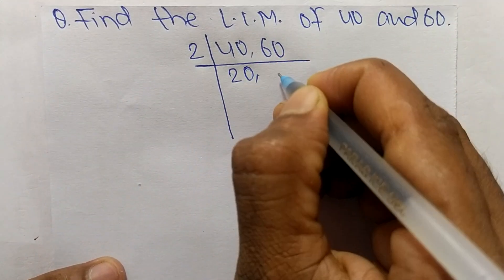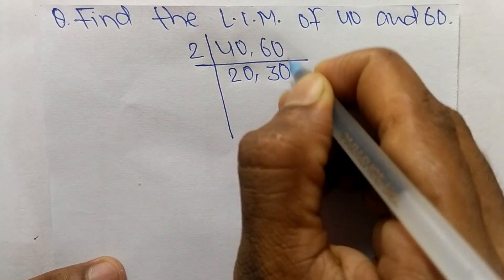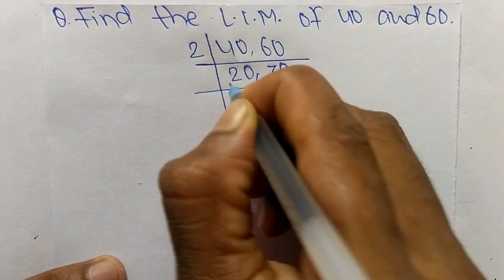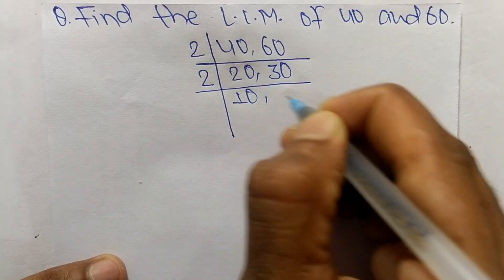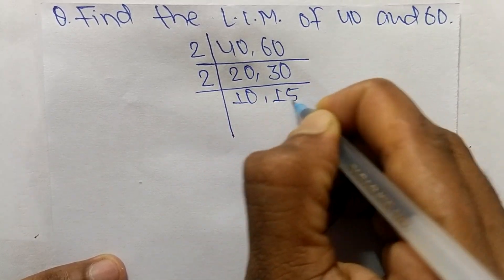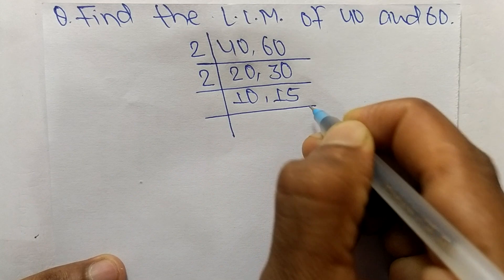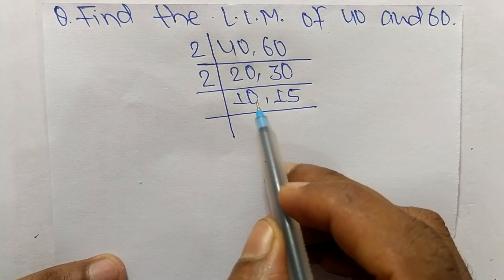2 times 20 means 40, 2 times 30 means 60. Again, these both are divisible by 2, so 2 times 10 means 20, 2 times 15 means 30. Now 2 can't exactly divide 10 and 15 both.